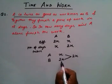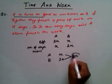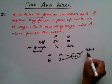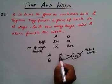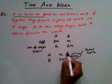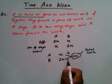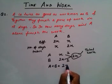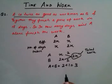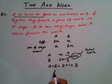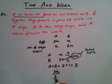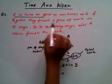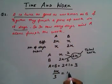So X is the number of days taken by A and 2X is the number of days taken by B, and 2X is the total amount of work. Dividing total work 2X by X gives one day work of A, which is 2. Dividing 2X by 2X gives one day work of B, which is 1. Combined one day work of A and B is 2 plus 1, which is 3. Total work 2X divided by combined one day work 3 gives the number of days for A and B together, and it is given as 18 days.